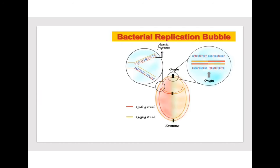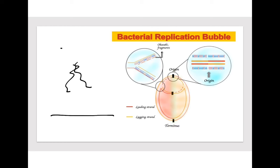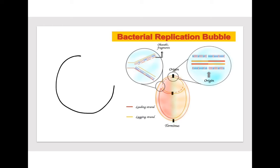In eukaryotes like you and I, or plants, the DNA is actually linear — our chromosomes look like this, which is linear. Bacteria, on the other hand, has circular DNA. There is one chromosome in bacteria, whereas eukaryotes tend to have multiple. You and I have 46, whereas bacteria has one.